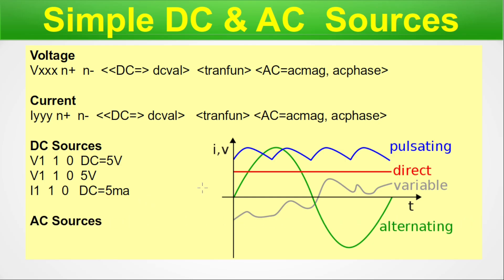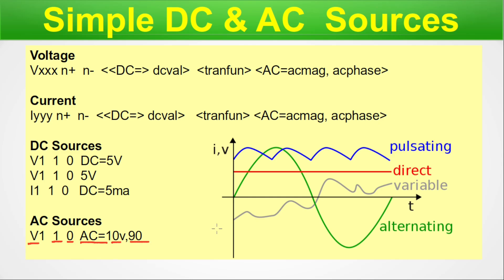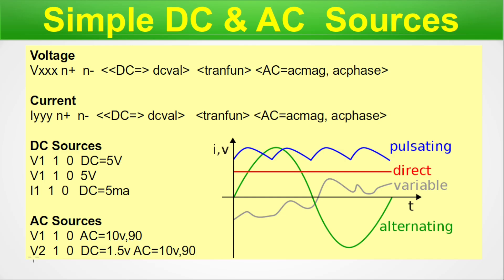For AC sources: V1 connected between nodes 1 and 0, with AC amplitude of 10V and phase of 90 degrees. Another example: V2 connected between 1 and 0, where the DC offset is 1.5V, the AC voltage is 10V, and the phase is 90 degrees. This way we can define simple DC and AC sources for your SPICE deck to power up the circuit under concern.